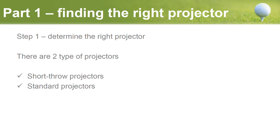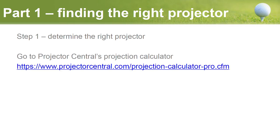To determine the right projector, there are essentially two types: short throw and standard throw. To figure out which is right for you, you need to determine where you'll install the projector — basically how far away from the screen you need to set it up. I really recommend using the Projector Central projection calculator, which will allow you to determine exactly where you need to set up your projector.